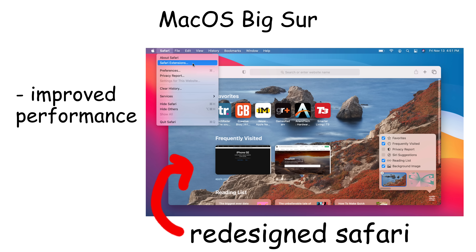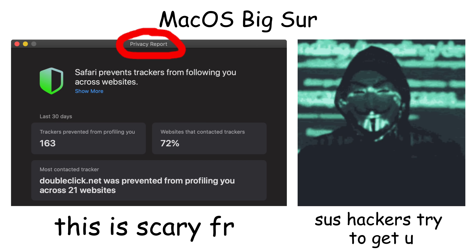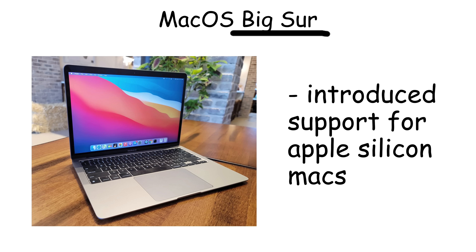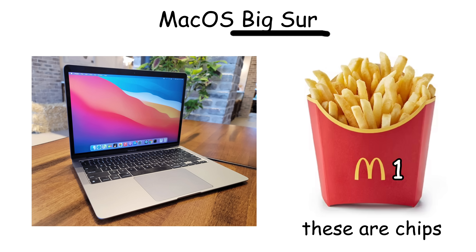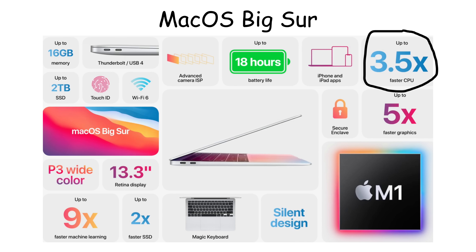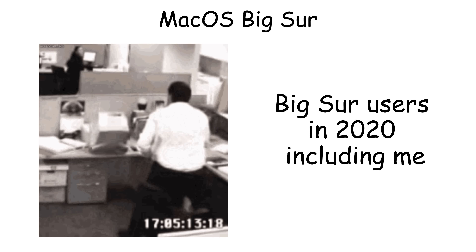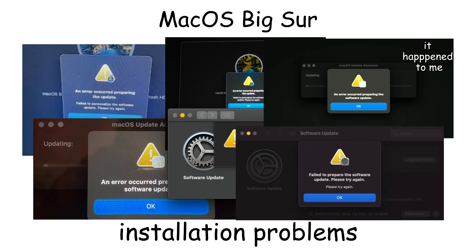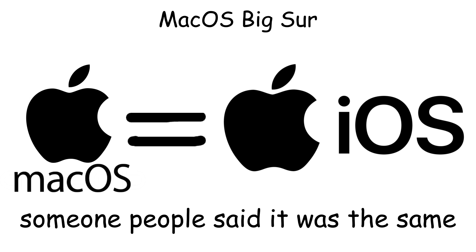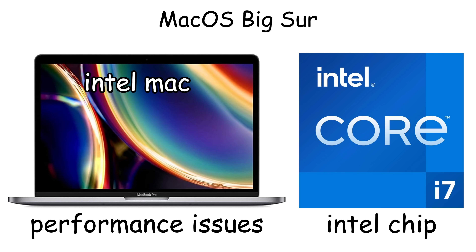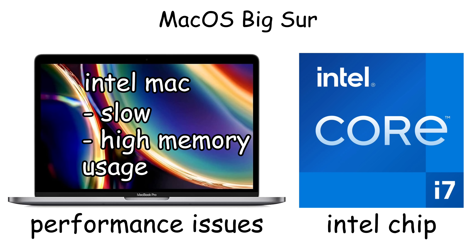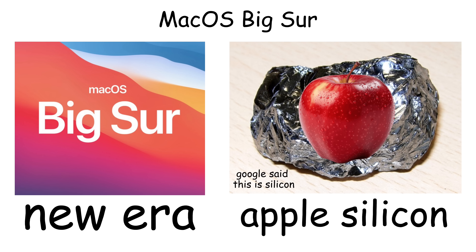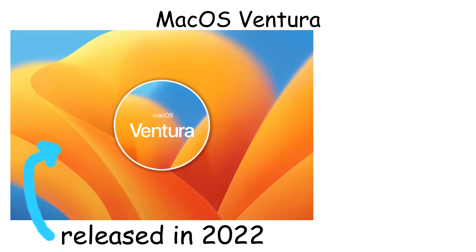The redesigned Safari featured improved performance with faster page loading. Big Sur enhanced privacy features with a privacy report. Most importantly, Big Sur introduced support for Apple Silicon Macs with M1 chips, bringing significant performance improvements and better battery life. However, many users reported installation problems, with some Macs experiencing failures during updates. Others complained the design felt too iOS-like. Performance issues were common on older Intel Macs. But despite the rough launch, Big Sur marked a new era with Apple Silicon.